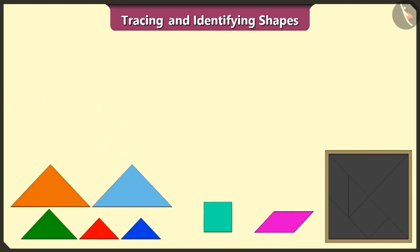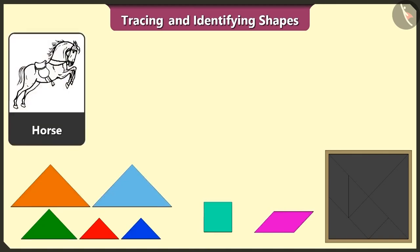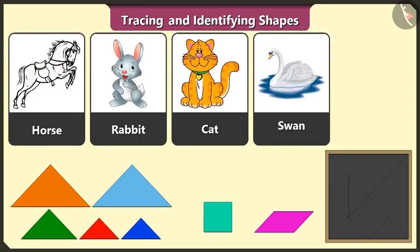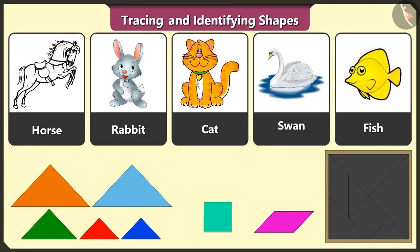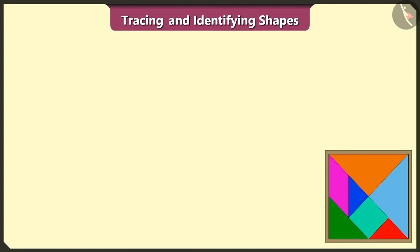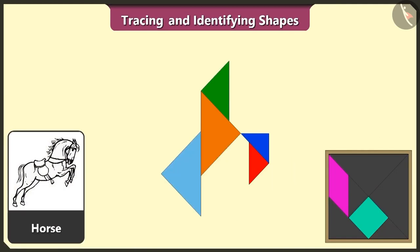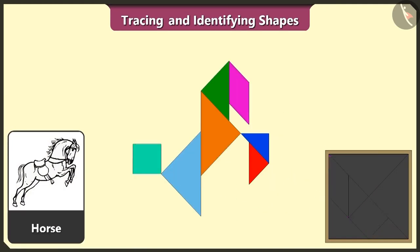Today, we will create figures of horse, rabbit, cat, swan and fish using these shapes. Look, this is a horse. Now, we will make a horse using 5 triangles, 1 square and 1 quadrilateral. See, the horse is ready.